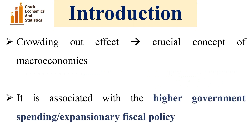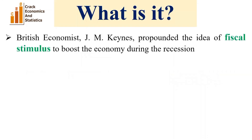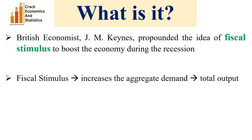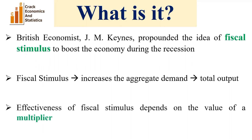Crowding out effect is a crucial concept of macroeconomics. It is associated with higher government spending, that is, expansionary fiscal policy. British economist J.M. Keynes propounded the idea of fiscal stimulus to boost the economy during recession. Fiscal stimulus increases aggregate demand in the economy and hence helps to raise total output.